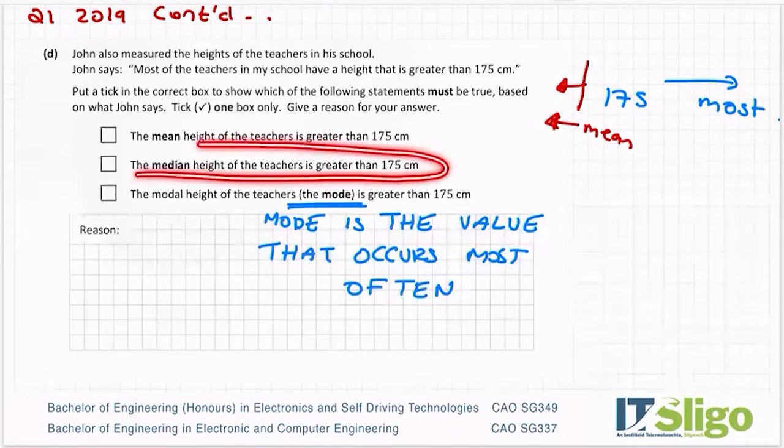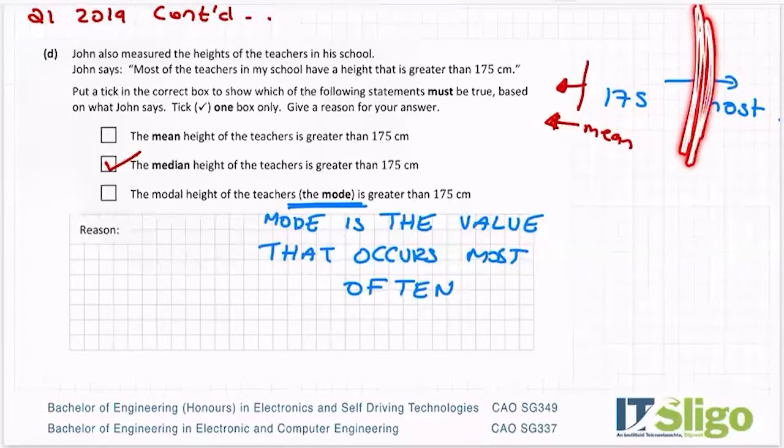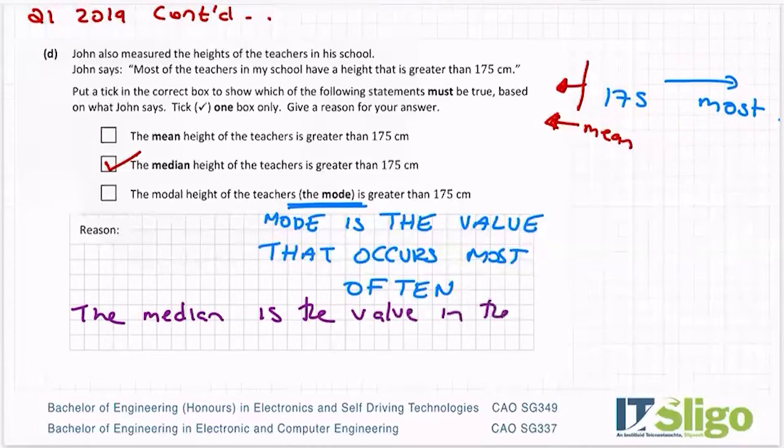The median height of the teachers is greater than 175. Well, that one is for sure correct. Why? Because remember what median is. Median is the value in the middle when they're all in order. Now, if you have most of your teachers greater than 175, then isn't the middle height going to be somewhere up here? Because it's the value in the middle. So I hope that makes sense.